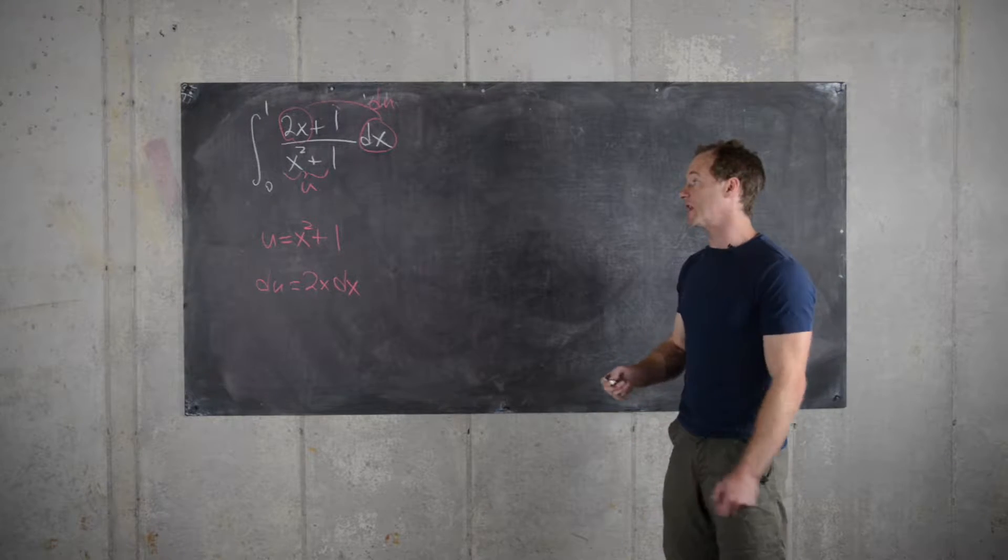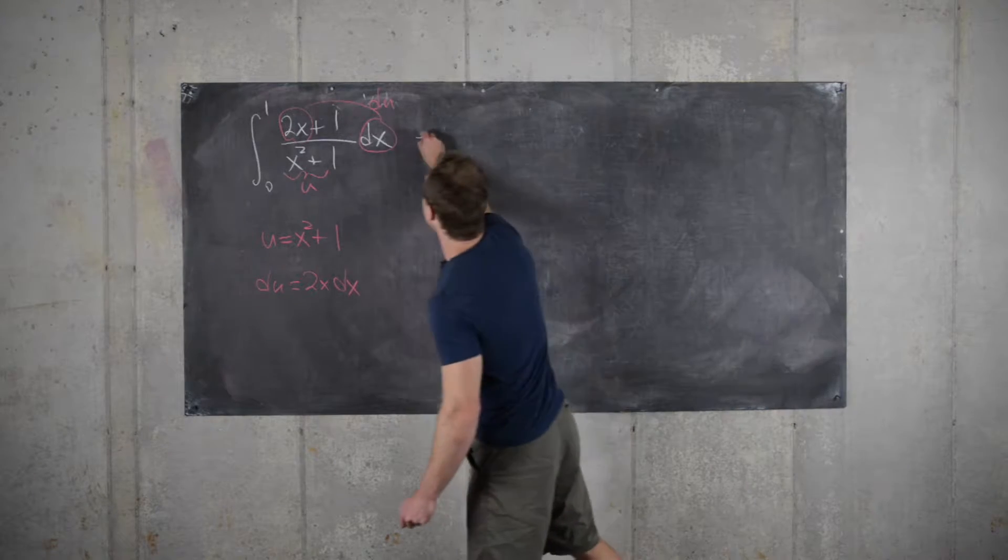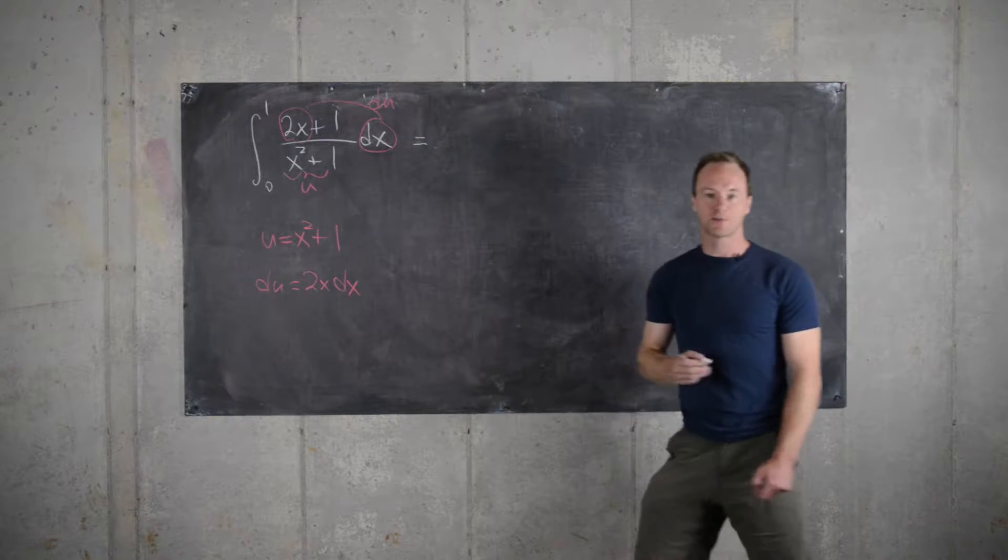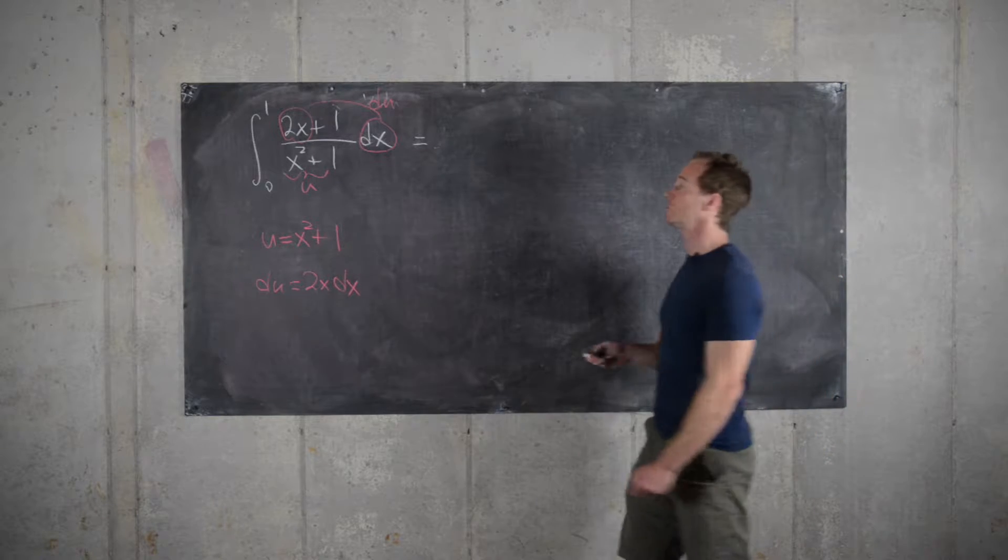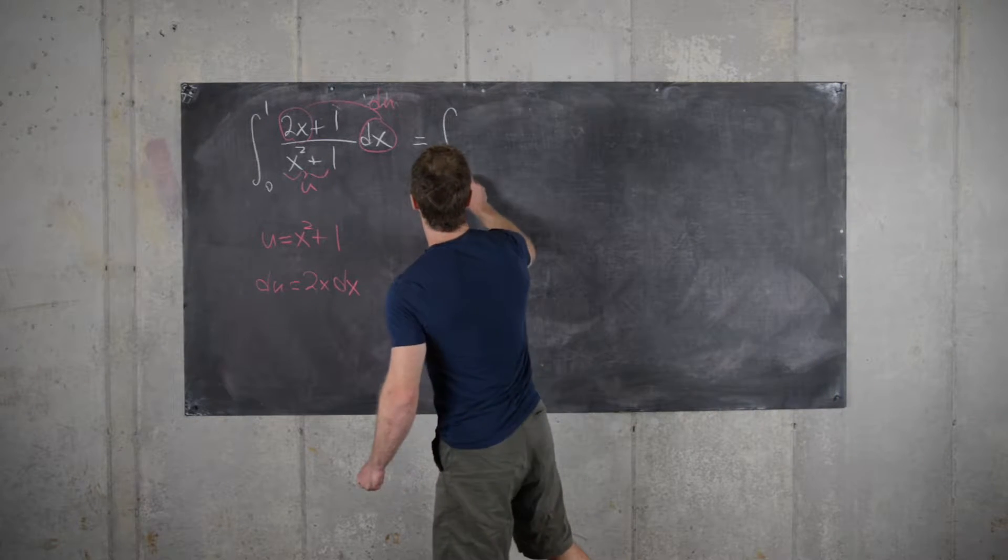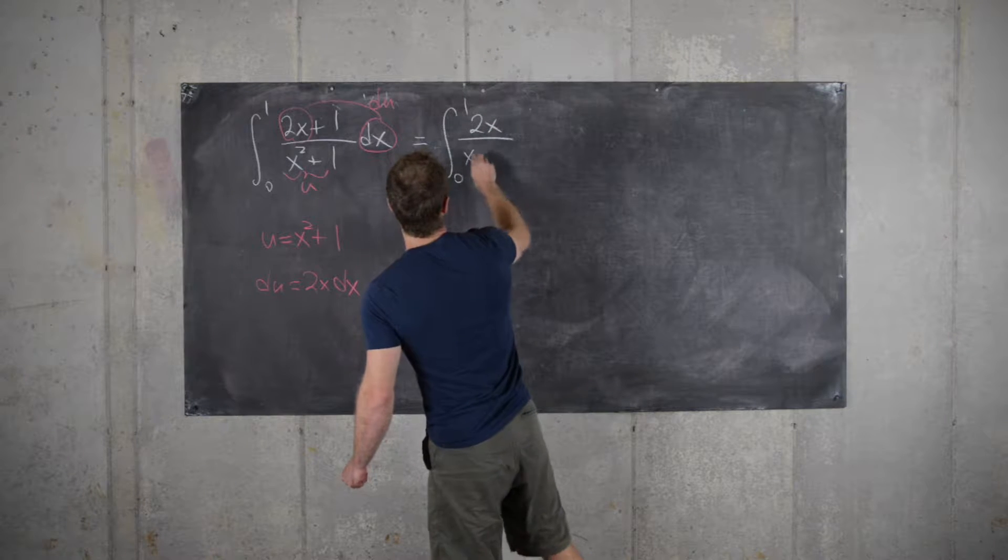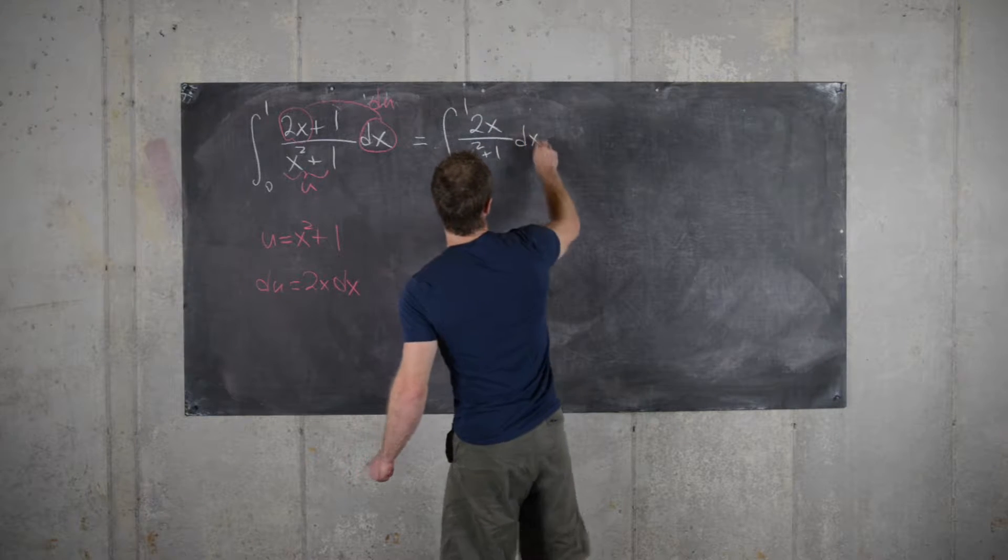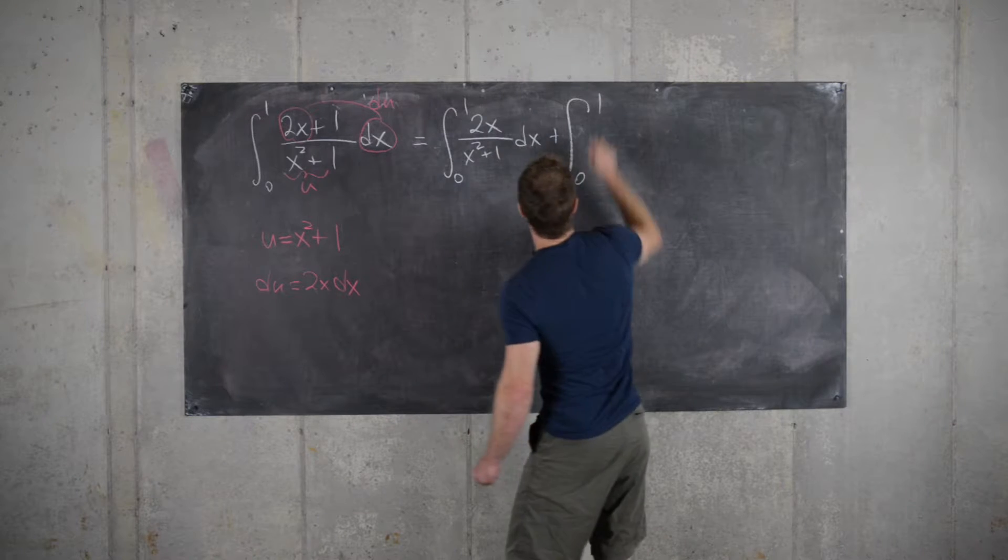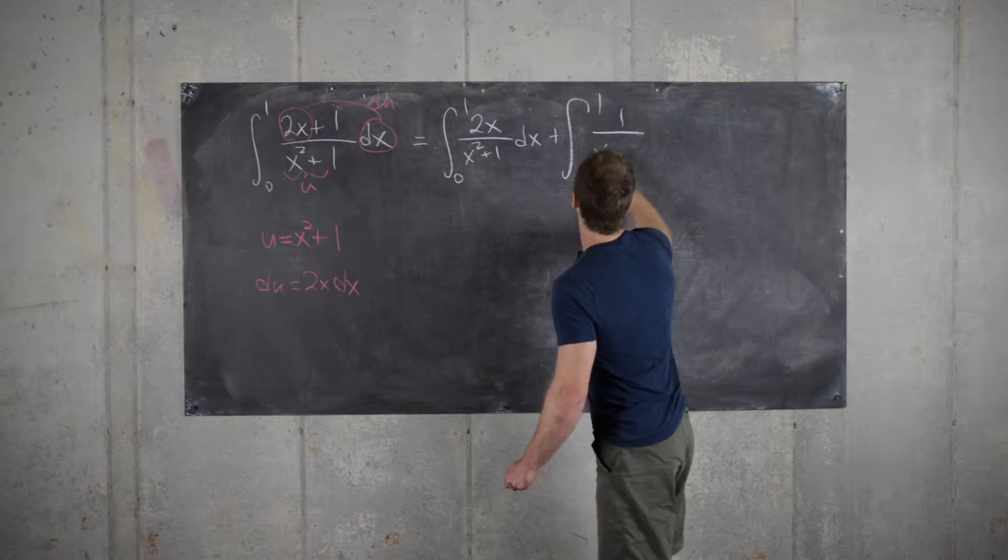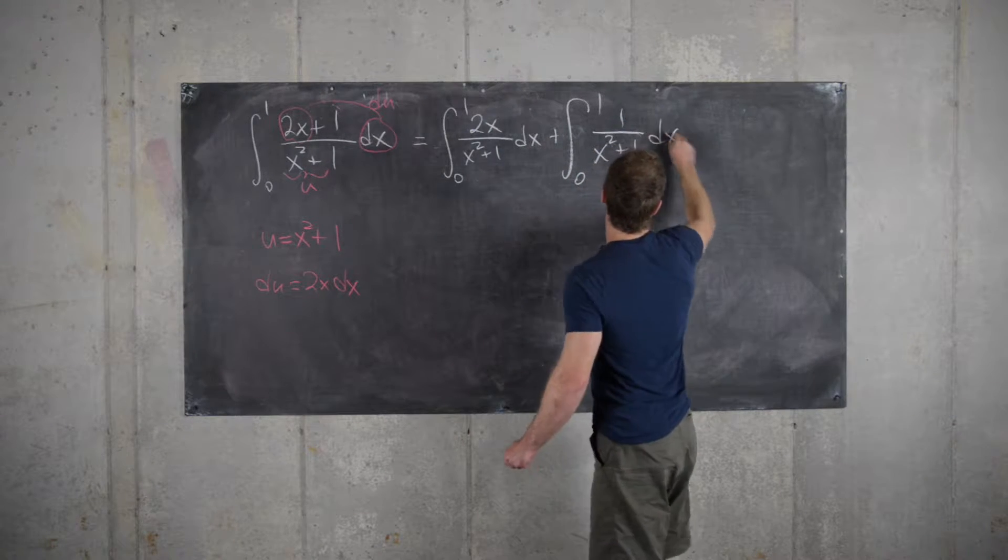So that gives us some motivation to split this thing up into the sum of two integrals. So let's do that. We can write that as the integral from 0 to 1 of 2x over x squared plus 1 dx plus the integral from 0 to 1 of 1 over x squared plus 1 dx.